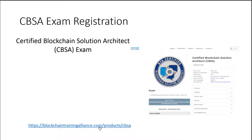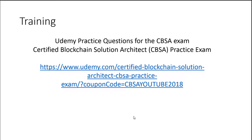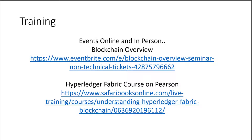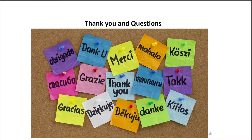For the exam, go to the CBSA website, sign up — it's $300. They did release a study guide as well, around $30 to $40. For practice questions, I have some available on Udemy — the link is there. I also have a blockchain overview seminar online and a Hyperledger Fabric course on Pearson as well. Thanks for joining, and please reach out if I can help. Good luck.